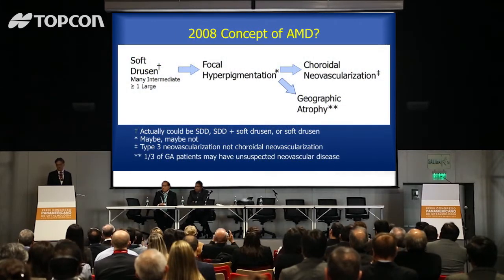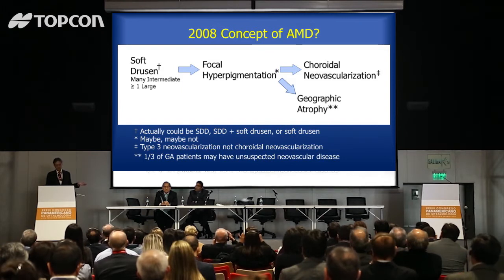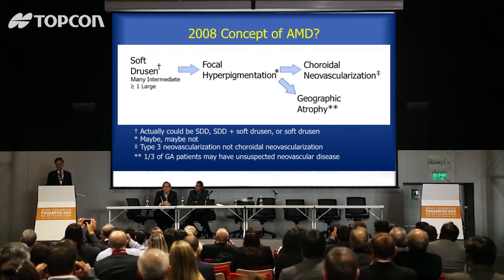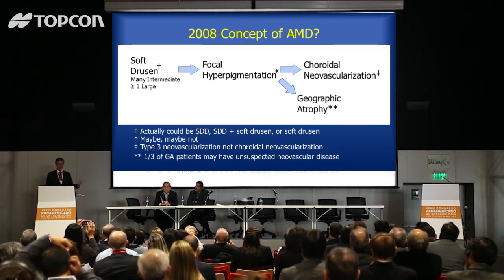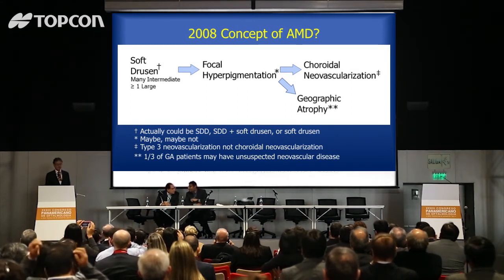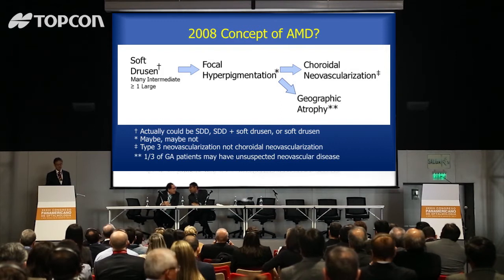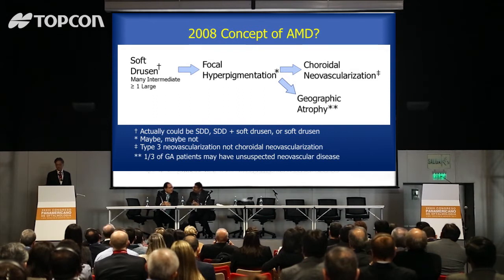Looking at the 2008 concept of AMD, we realize there are a lot of errors. Many patients thought to have soft drusen really had pseudodrusen. Focal hyperpigmentation is not a necessity in the rate of progression. Choroidal neovascularization is an inaccurate term for type 3 neovascularization. And in terms of geographic atrophy, the SARC showed that if you look at eyes thought to have geographic atrophy by histopathology, 45% of them had neovascularization. So this 2008 concept is pretty far off the mark.